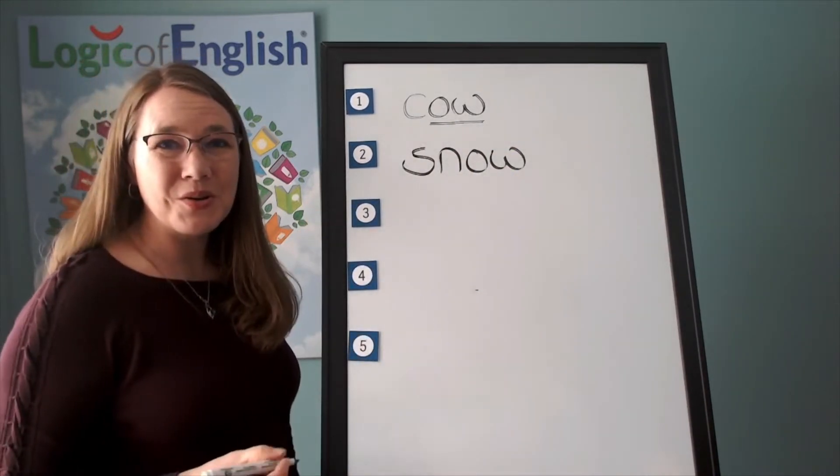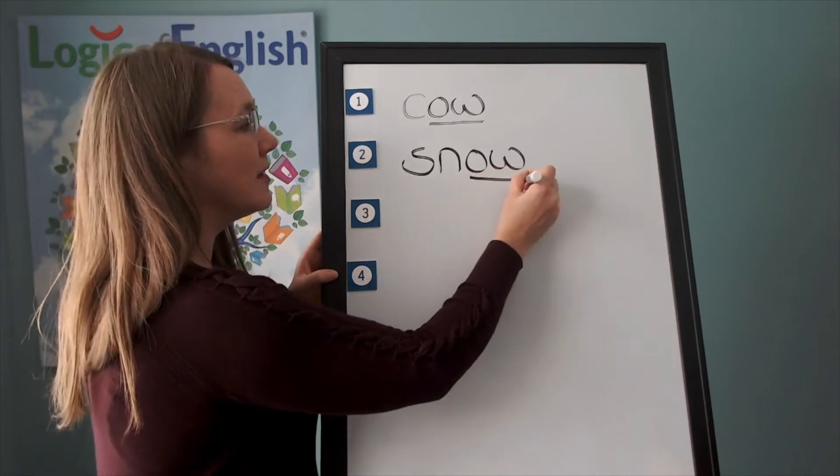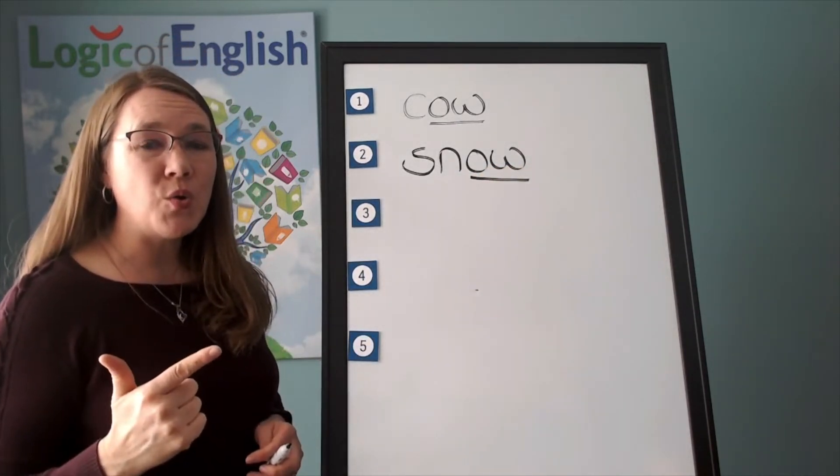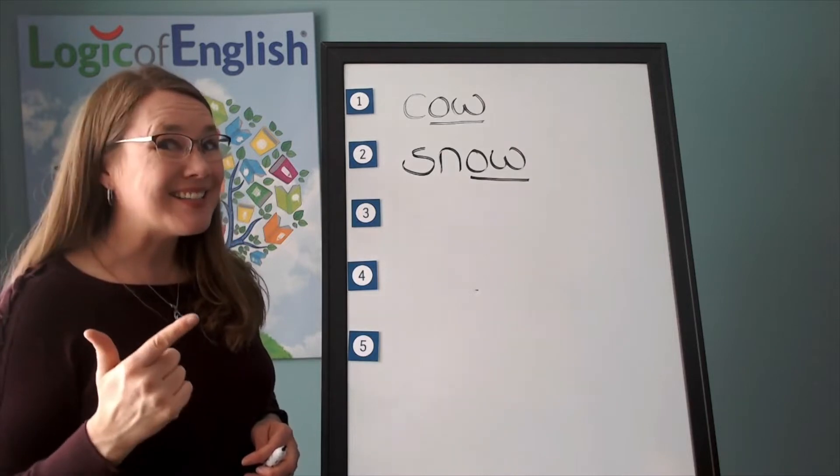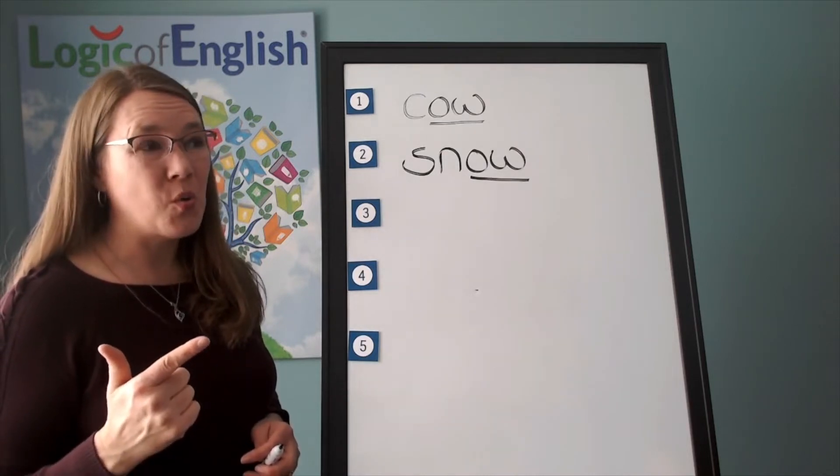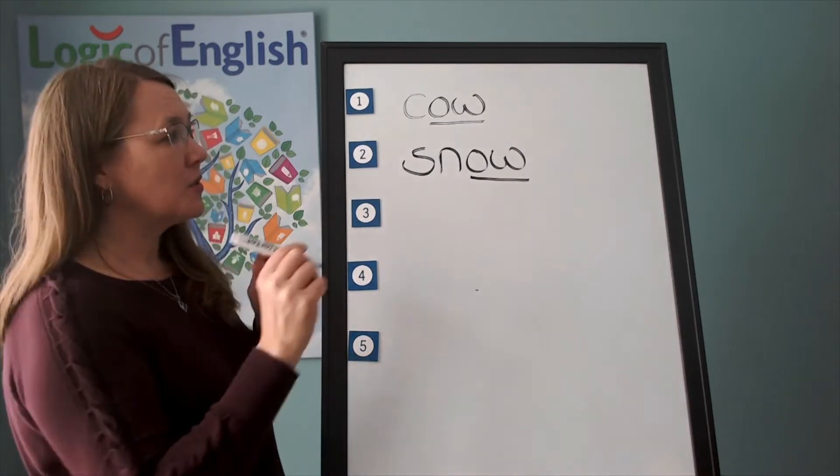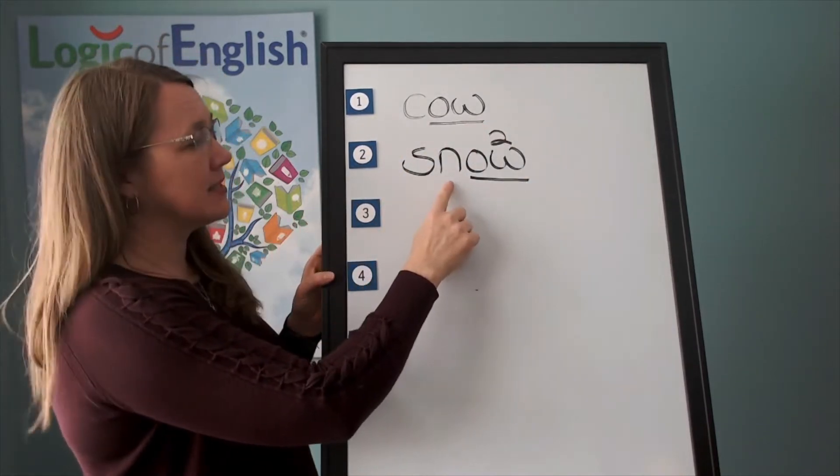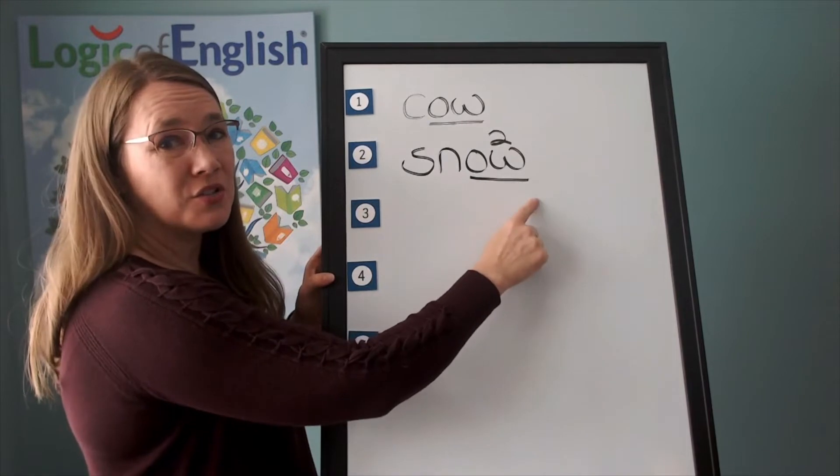How will we mark snow? You're right. We'll underline the o. And what sound of ow-o is this? It's its second sound. O. Snow. So we'll put a two over it. Let's sound it out. S-n-o. Snow.